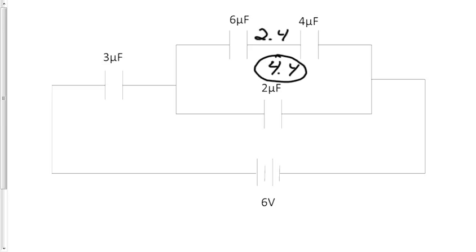Now let's think about this. The 3 is in series with the 4.4, and we still have 6 volts attached to this. So I'm just going to write a representation here. This is the 3 and then the 4.4.